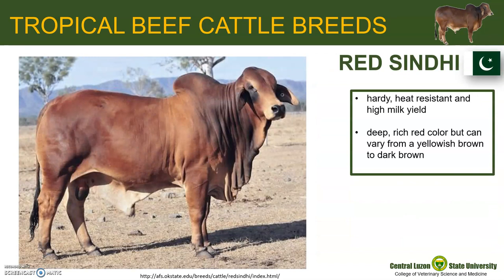The Red Sindhi originated from Pakistan, but due to its hardiness, heat resistance, and high milk yields, it has spread into many parts of the world. They are normally a deep, rich red color, but this can vary from yellowish brown to dark brown. Males are darker than females and when mature may be almost black on extremities such as the head, feet, and tail.